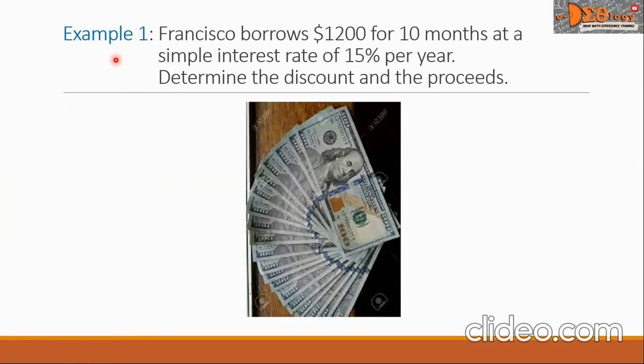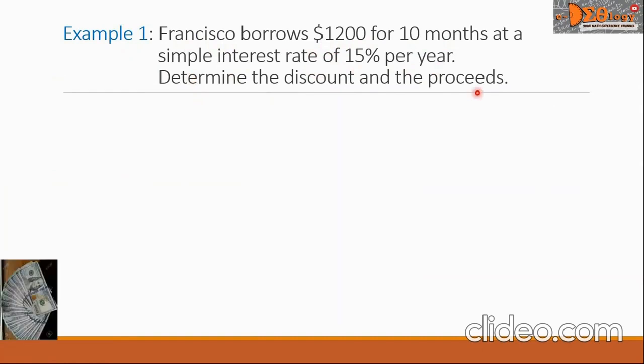Let us have this example one. Francisco borrows $1,200 for 10 months at a simple interest rate of 15% per year. Determine the discount and the proceeds. First, let us write the given of the problem, starting with the amount denoted by M, and that is $1,200.